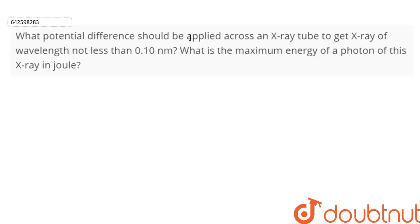What potential difference should be applied across an X-ray tube to get an X-ray wavelength of not less than 0.10 nanometer, and what is the maximum energy of a photon of this X-ray in joule?